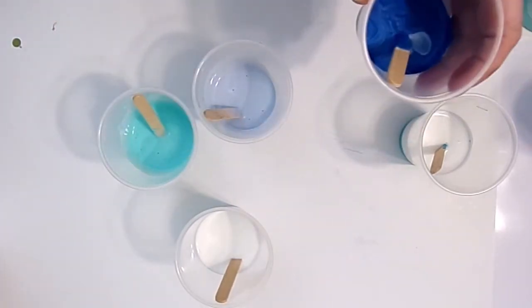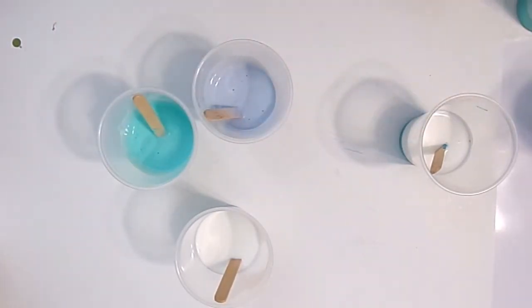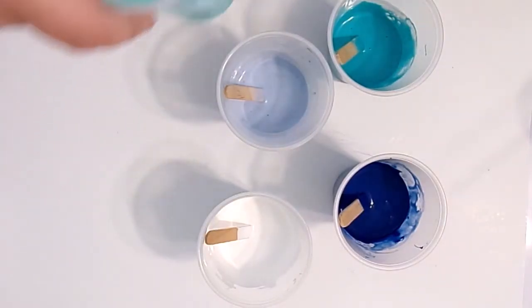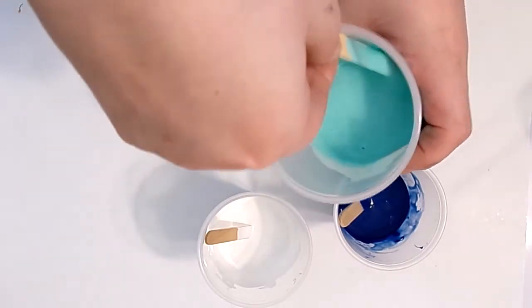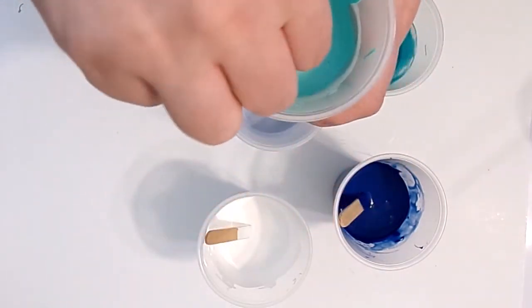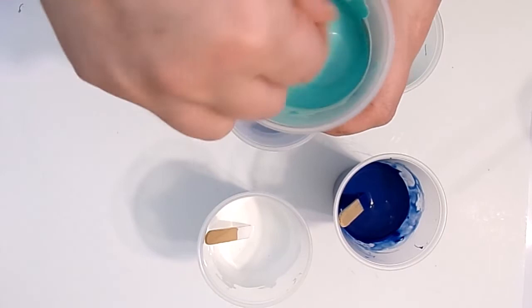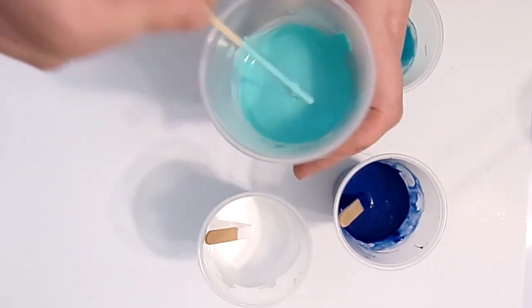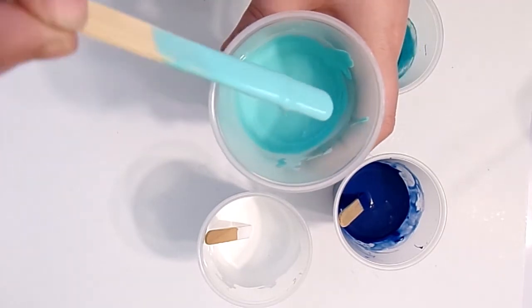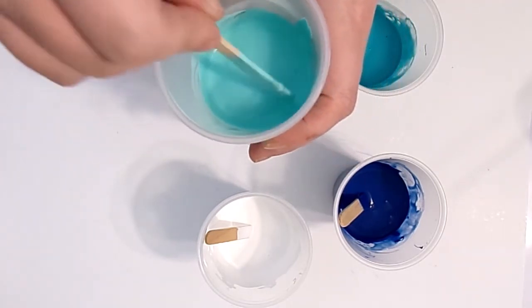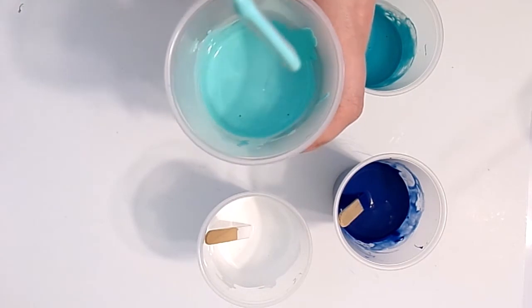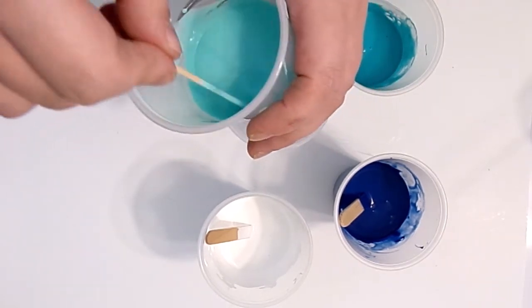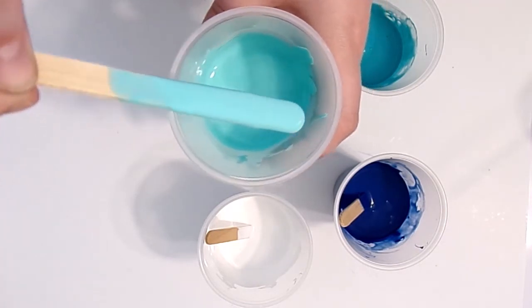All right, well I'm going to mix these all up and then I'll come back when they're all mixed up. Okay, I've got those all mixed up, so when you're mixing them up you want to make sure you get all the sides, scrape along the sides, get the bottom real good where you got the paint, and the consistency you're going for is like warm honey, melted ice cream, crepe batter, any of that kind of consistency.